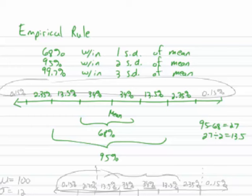To the outside of that, 100% minus 99.7% is 0.3%. And if we break that in half, that's 0.15% to the right of that last value and 0.15% to the left of that first value.